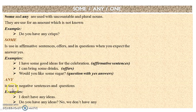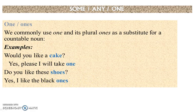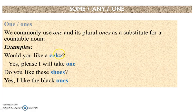Any is used in negative sentences and questions. For example: 'I don't have any ideas,' 'Do you have any ideas? No, we don't have any.' Then we have one, whose plural is ones. One is a substitute for a countable noun. For example: 'Would you like a cake? Yes please, I will take one.' One is replacing the cake. 'Do you like these shoes? Yes, I like the black ones.' Ones is replacing the shoes.